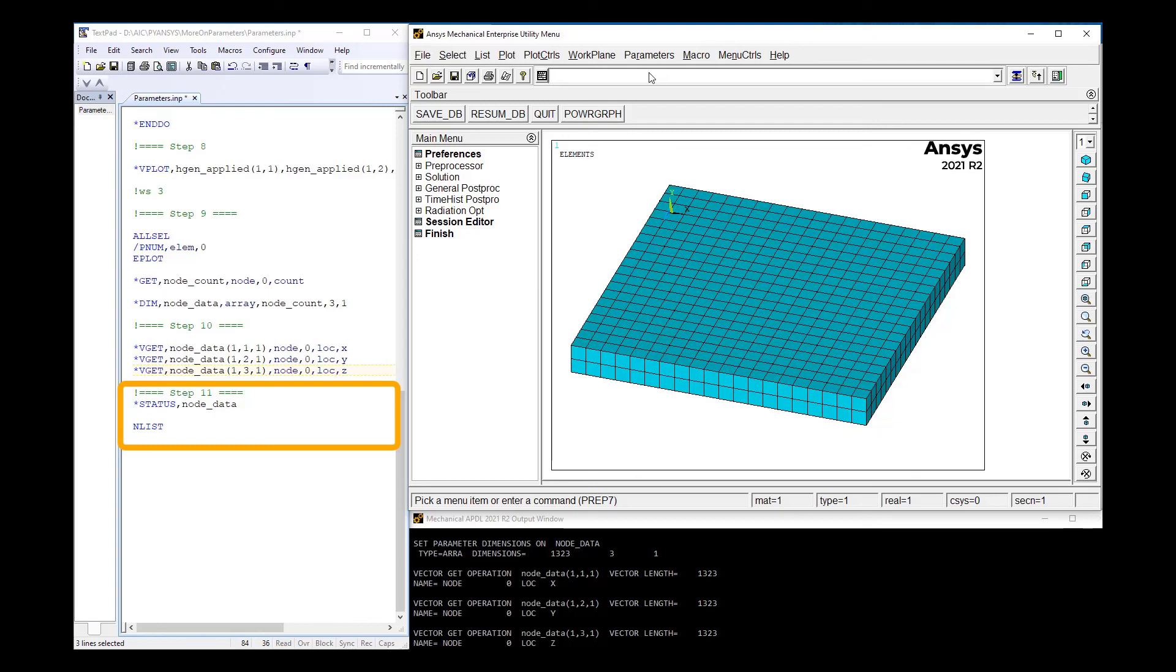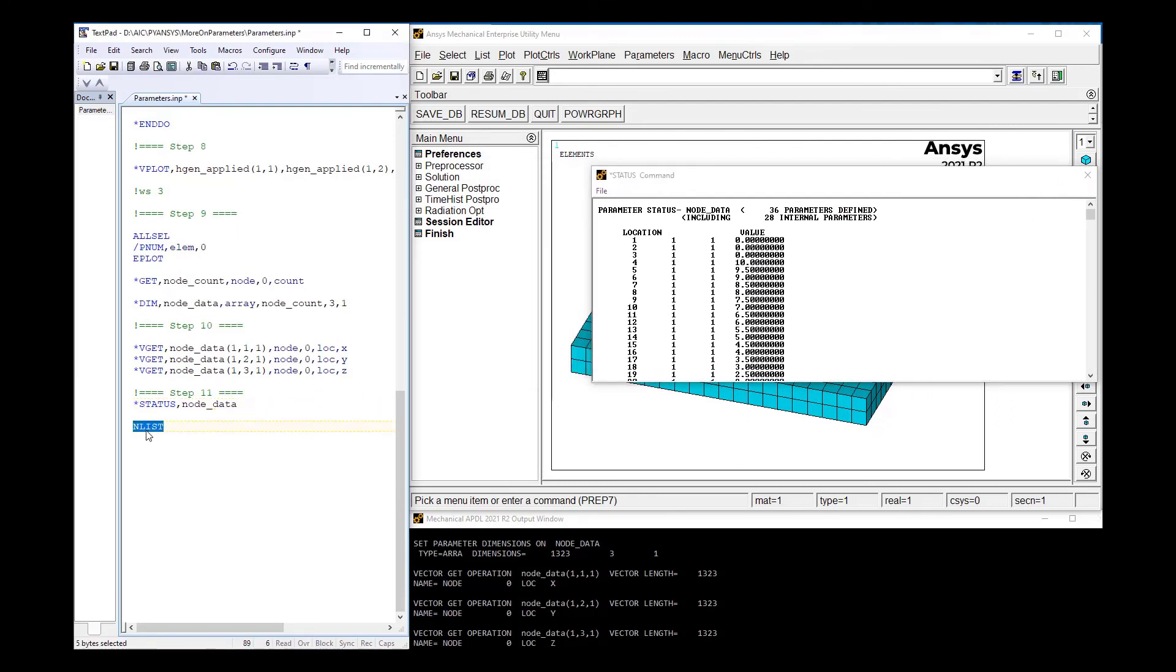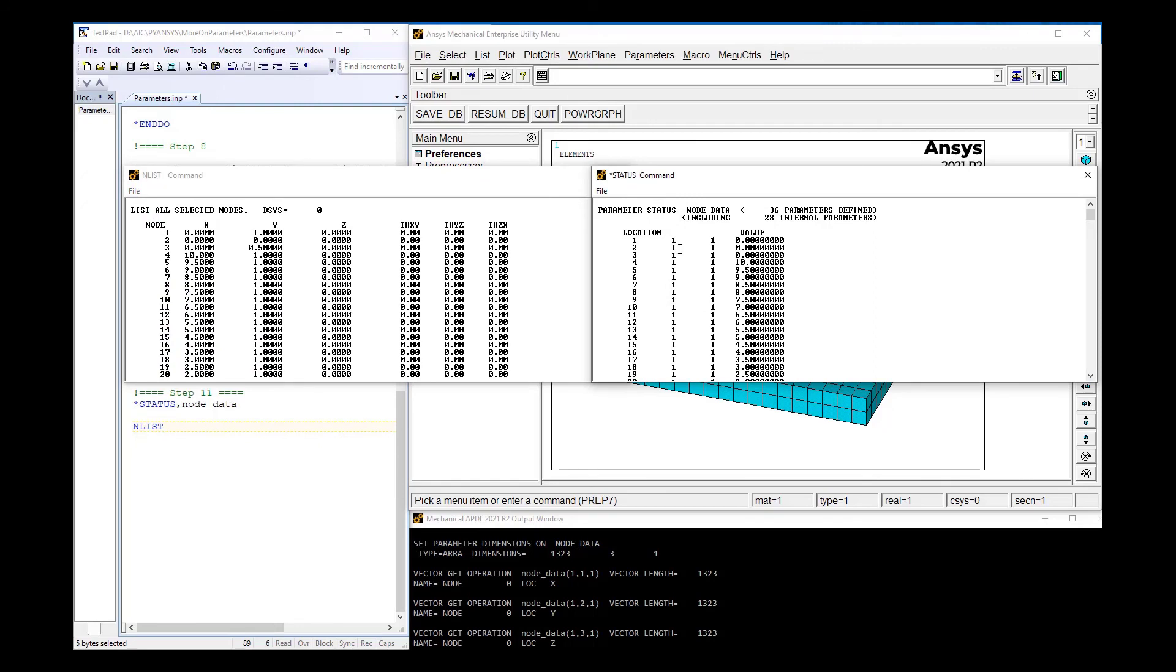And lastly, we will list the node array data with the *STATUS command and then compare it with the node listing from the NLIST command. The *STATUS command shows the values for the first column, and then you need to scroll down to see the values for the subsequent columns. You can see that the values match the Y column. This concludes the workshop.